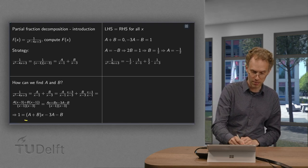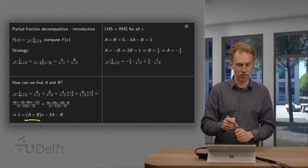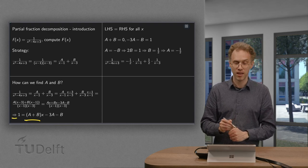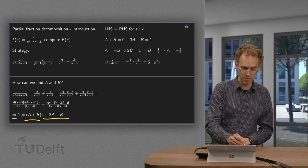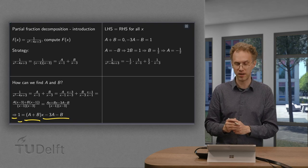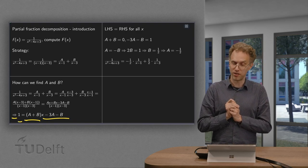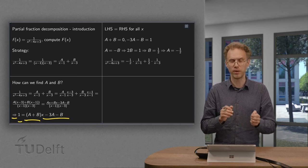So the coefficient for x, (A plus B), has to equal the coefficient here, which is 0. And the constant terms have to be the same: minus 3A minus B equals 1. Now we have two equations with two unknowns, so we can solve them.